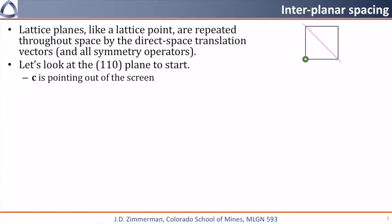Lattice planes, like a lattice point, are repeated throughout space by the lattice translation vectors. If we take the 110 plane, which I am showing with a c-direction pointed out of the screen, and we repeat the unit cell and plane using the lattice translation vectors, it tiles as I show here.